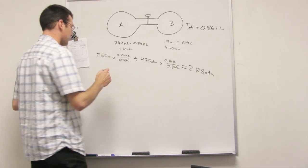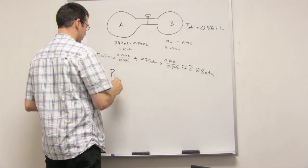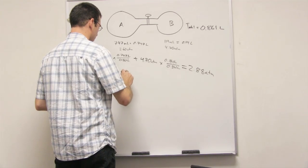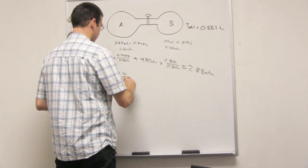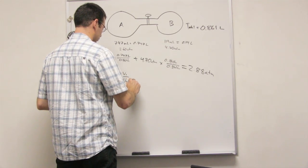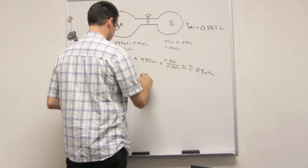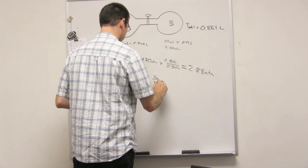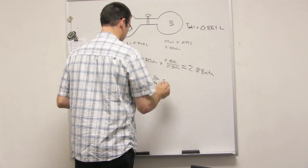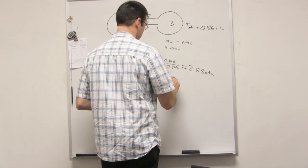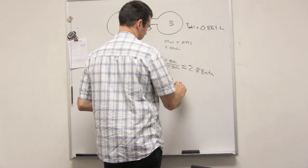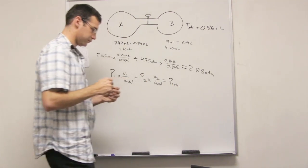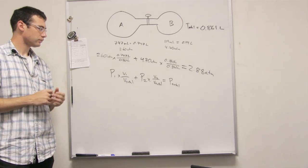So I guess writing this out would be P1 times V1 over V total plus P2 times V2 over V total equals the P total. Yeah. Okay. Good to remember.